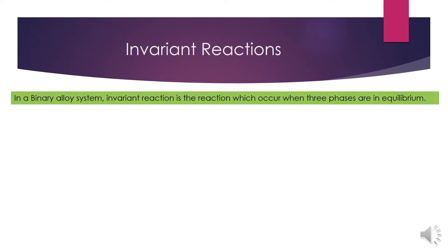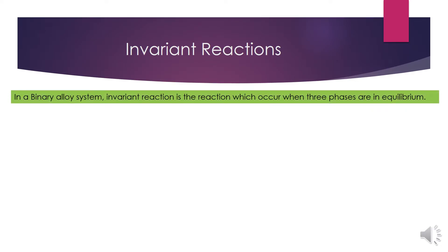So what is an invariant reaction in a binary alloy system? Invariant reaction is the reaction which occurs when three phases come in equilibrium with each other, like one liquid gives you two solid phases upon cooling, and upon heating these two solid phases become one liquid phase.